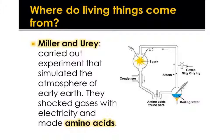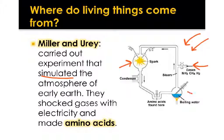There are a couple of experiments that tried to prove you can get living things from non-living things. One experiment was done by Miller and Urey. They carried out an experiment that simulated the early atmosphere of early Earth — they created a contraption made of tubes with one section that has electricity and another where they poured in gases, boiled the gases, and then shocked them with electricity to see what they could make.